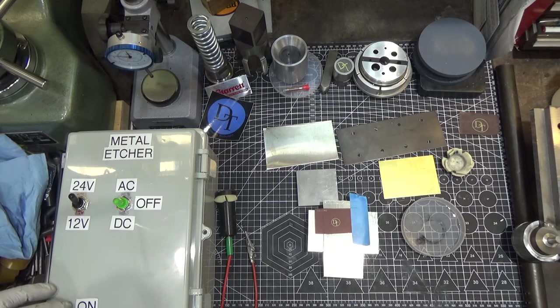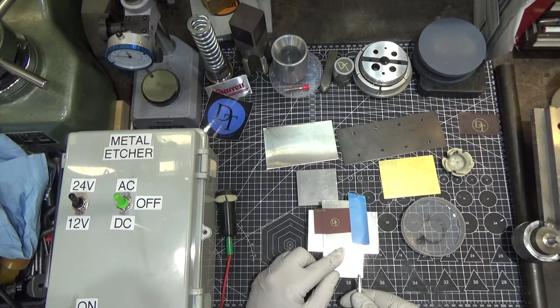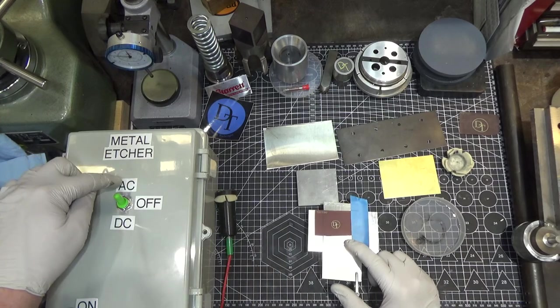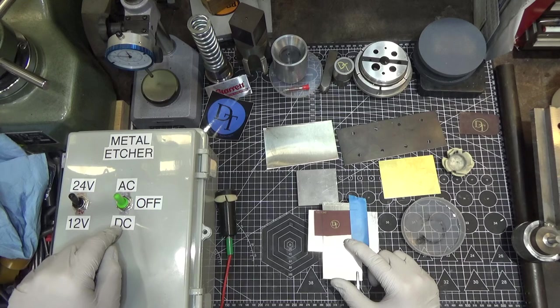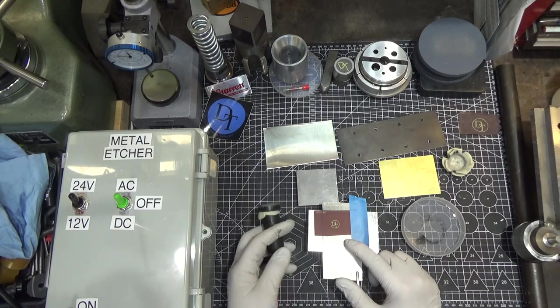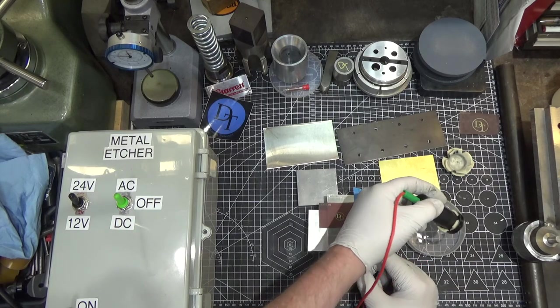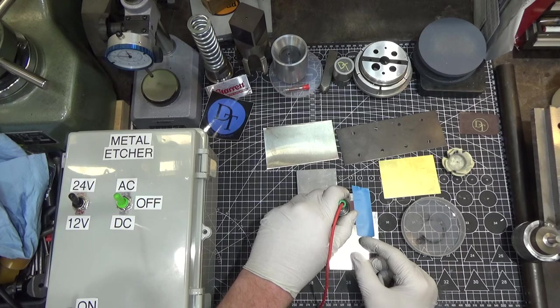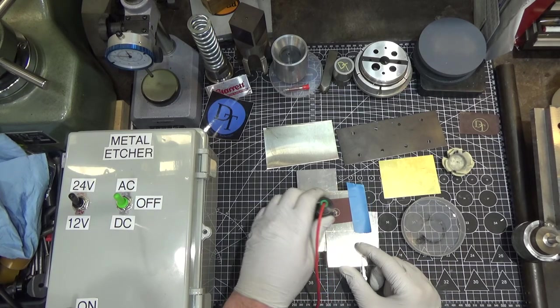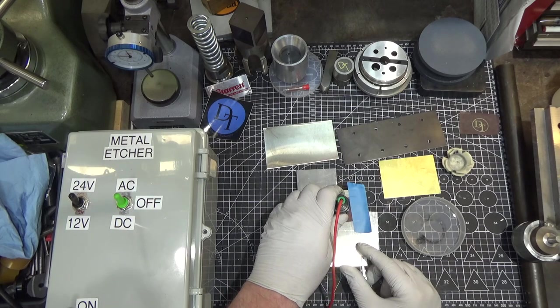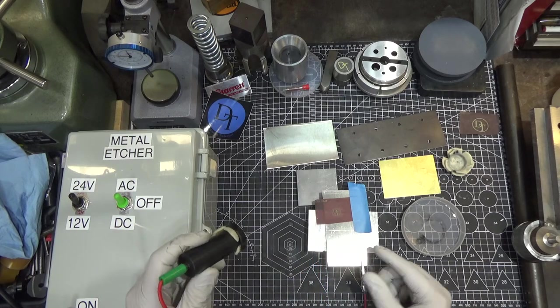We're going to start with 24 volts AC. That will allow us to mark it. AC supposedly marks dark. DC supposedly etches deeply. But this electrolyte solution is not supposedly very good for etching deeply. So a bunch of short passes.